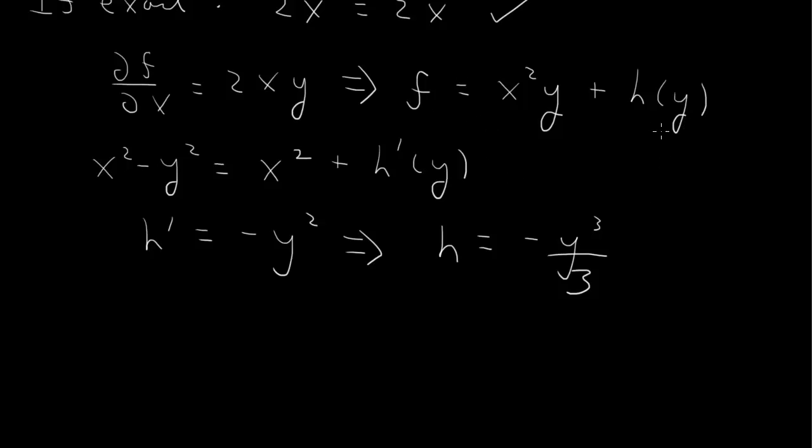But we're going to set f equal to a constant. So that constant we can throw on the right-hand side. So therefore, we get our solution that f of x, y is a constant, or we get x squared times y minus one third y cubed equals a constant. And that gives us all of the possible solutions to the original differential equation.